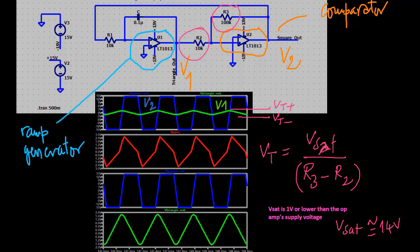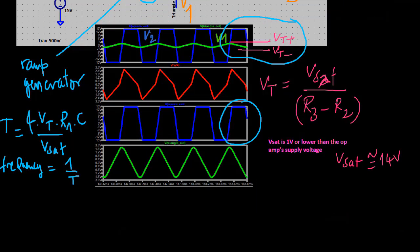Now this comparator is used with a ramp generator. The output of the ramp generator is connected to the input of the comparator, while its output is fed back to the input of the ramp generator. Each time the ramp voltage reaches the threshold voltage, the comparator changes states. This gives rise to oscillation. The period of the output waveform is determined by the R1 time C time constant, saturation voltage, and the threshold voltage.